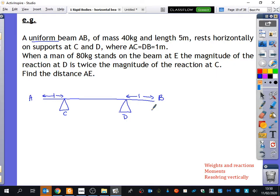So there's three between. Sometimes I don't want to over-label the stuff. I find when I over-label it with too many distances, it can get quite confusing. But that one might be something in a moment we do want to put on. It says, when a man of 80 kilograms stands on the beam at E, the magnitude of the reaction at D is twice the magnitude of the reaction at C. Find the distance AE. So we don't know where E is. We need to find out where is E. But this is the most important sentence that we've got here.